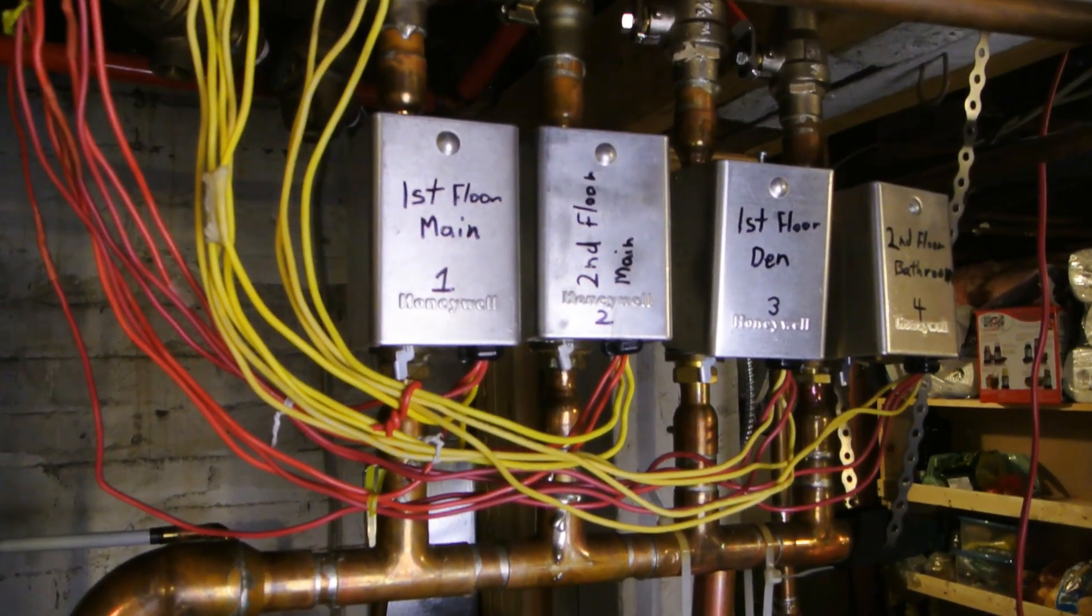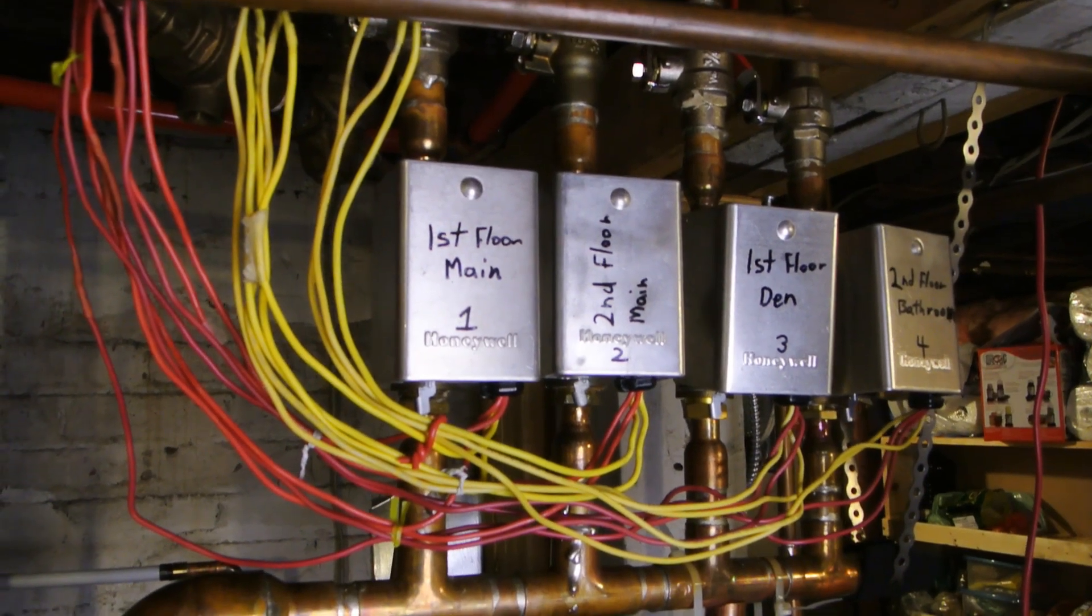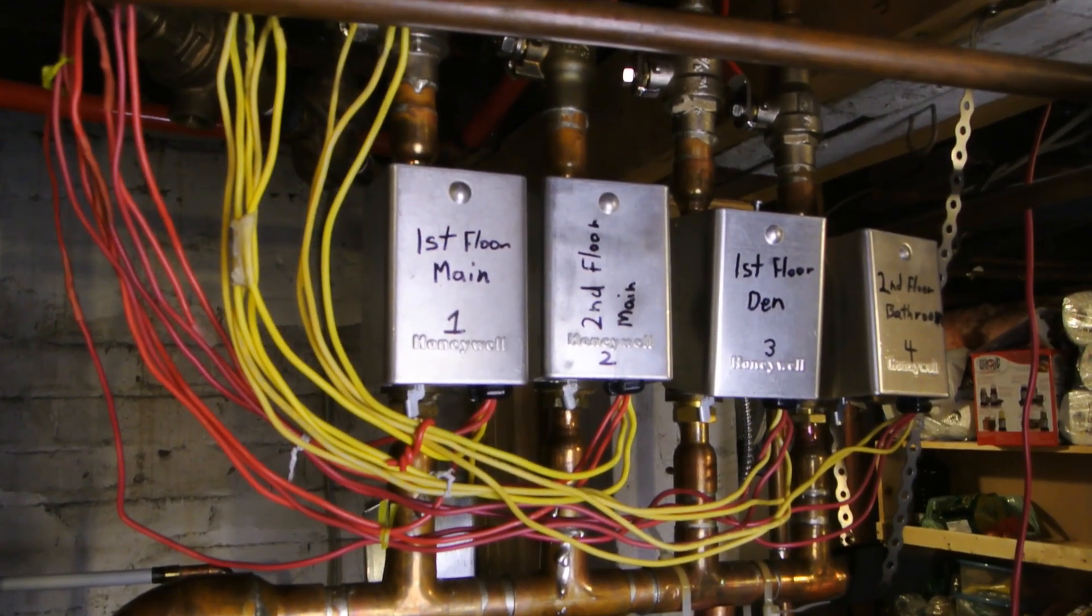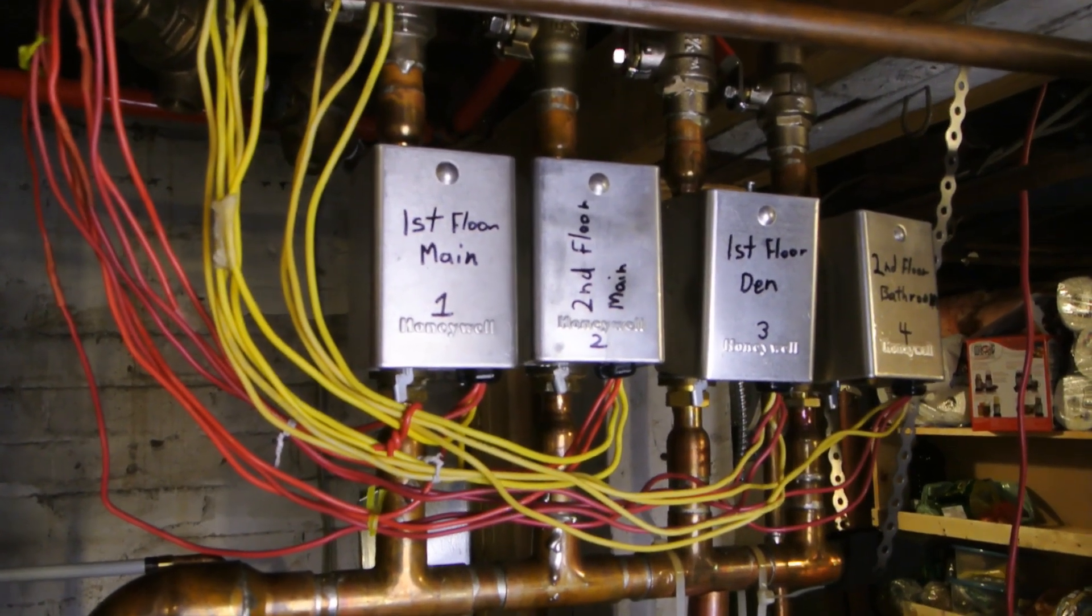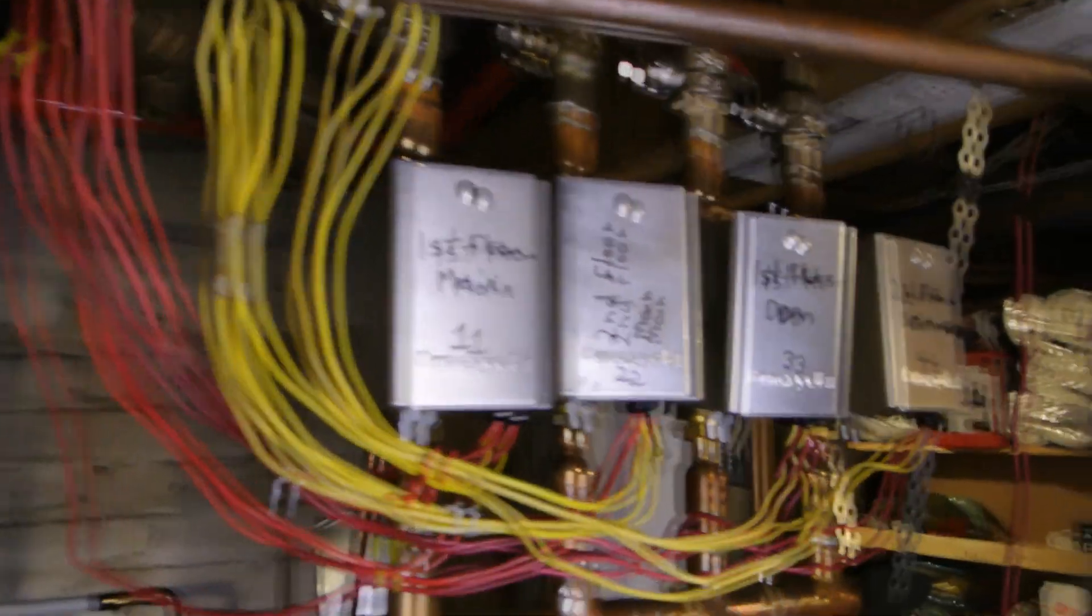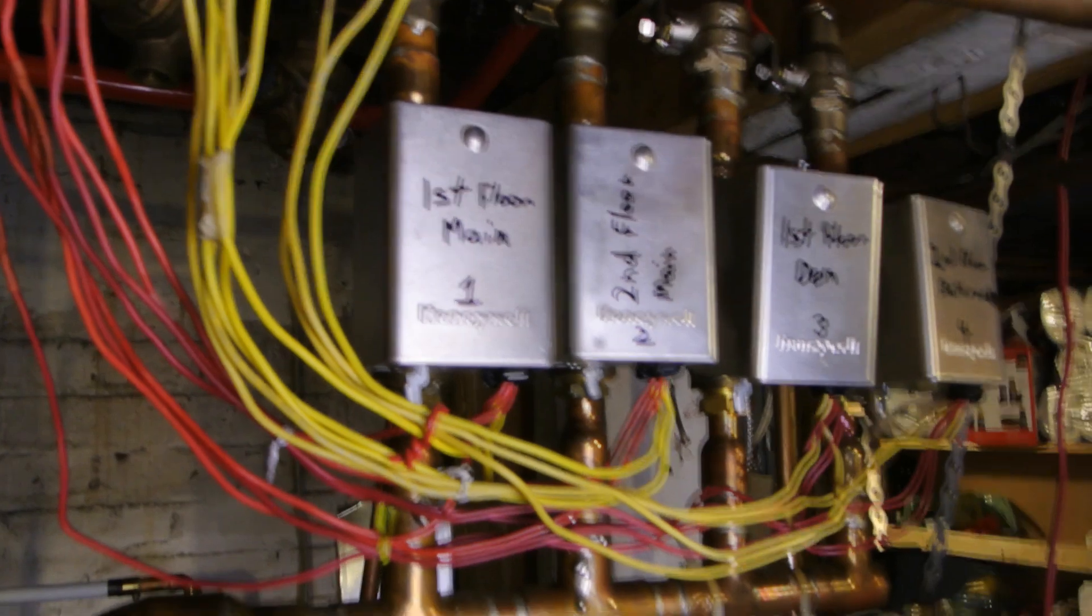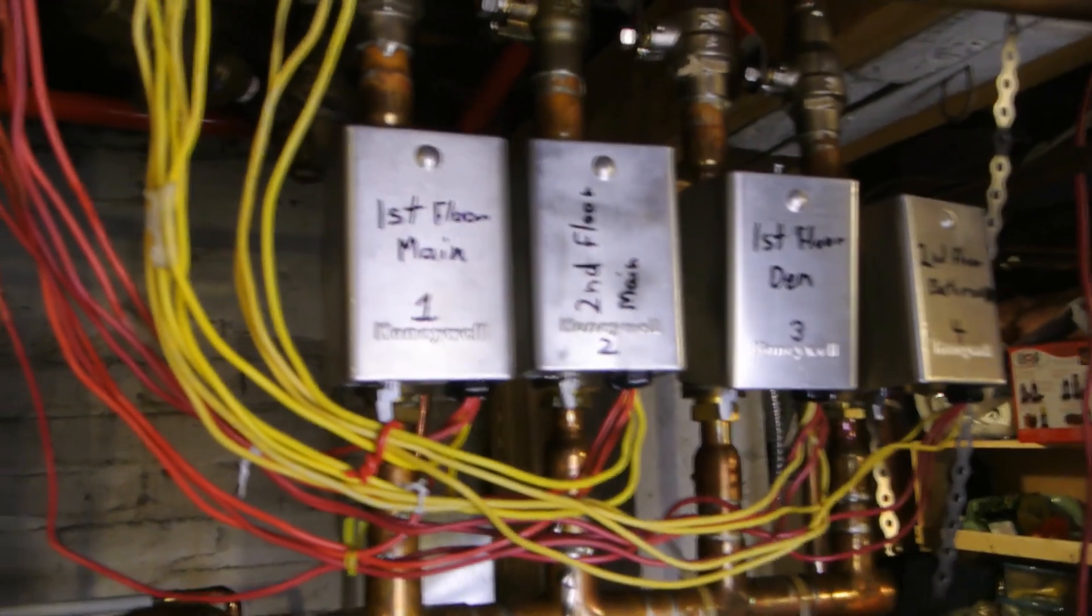This is one of the most common things that fail in a hot water boiler heating system, a hydronic hot water heating system. So this is the boiler here, and then these are the zone valves. What these zone valves do, as they're called, is your house is broken up into different zones.